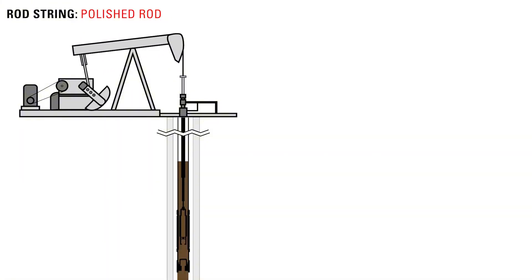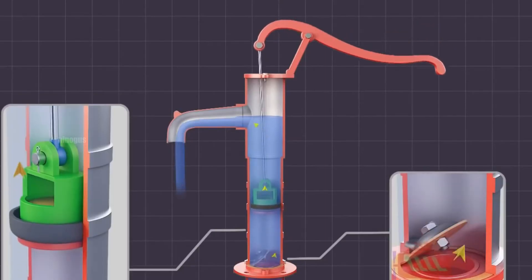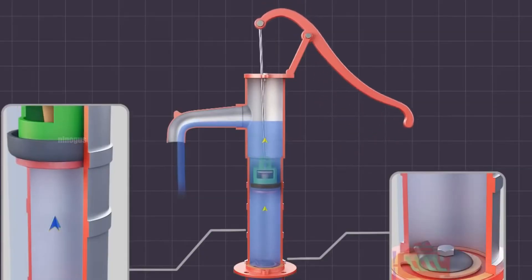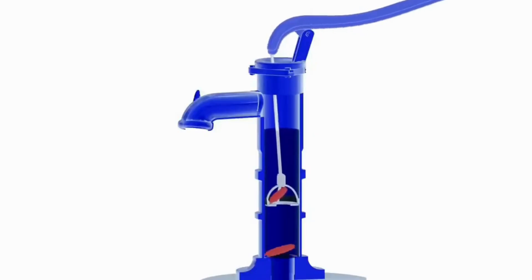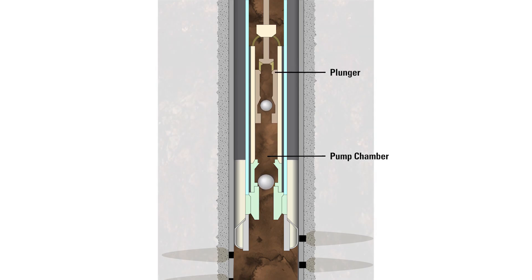Inside the well, there is a pump that operates on a principle similar to a manual water pump you may have seen in rural areas. This pump is equipped with two valves, a suction valve at the bottom and a discharge valve at the top.